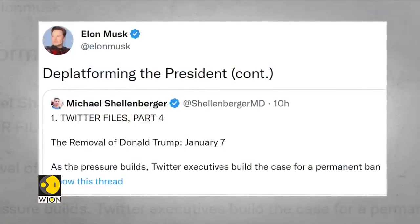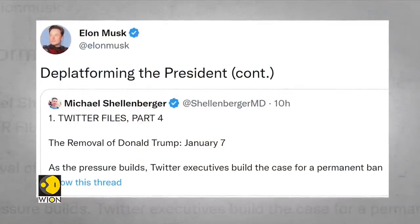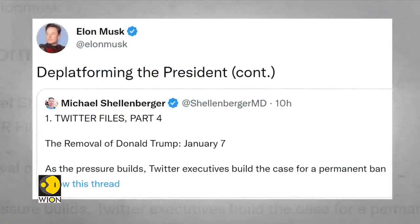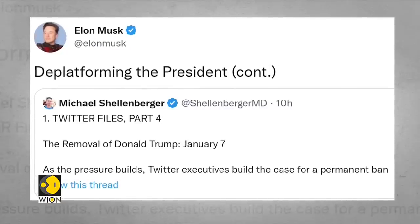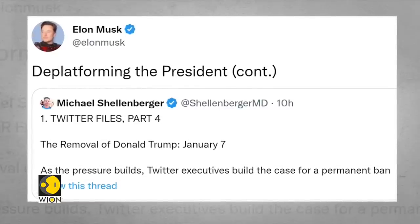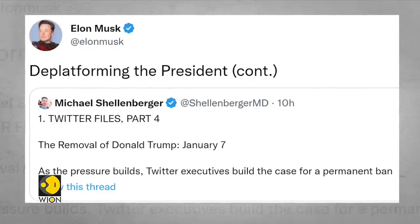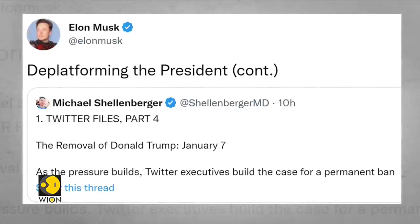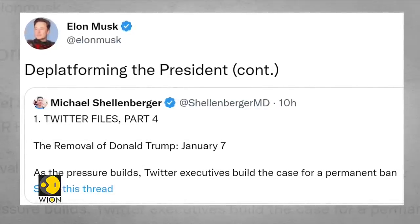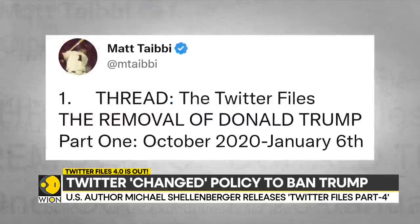Twitter Files 4.0, released by Elon Musk, shows details on how Twitter changed its account ban policy for former U.S. President Donald Trump alone. The latest thread posted by Twitter CEO Musk and American author Michael Schellenberger highlights the chaos within the company the day after the January 6th Capitol Hill riot, and how high-ranking Twitter executives violated their own policies for the former U.S. president.